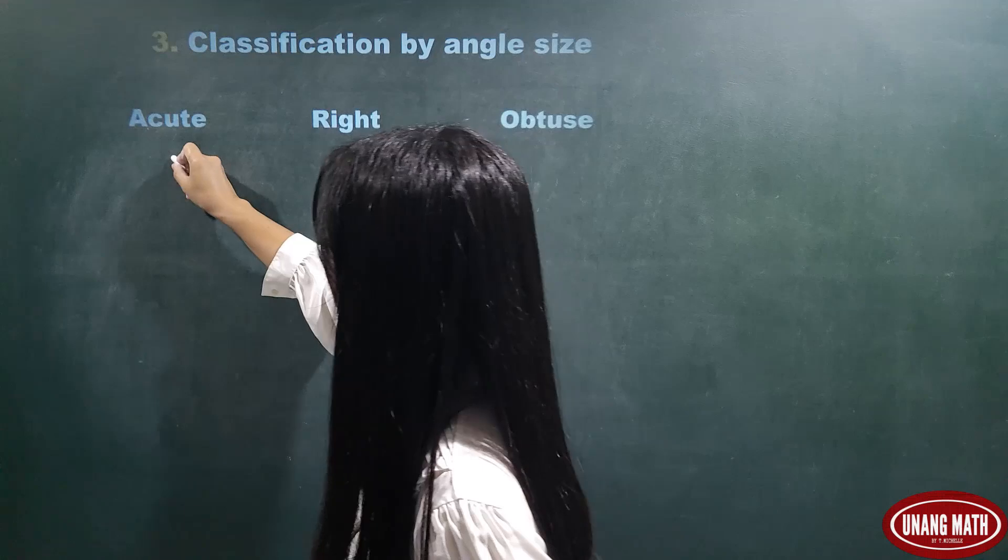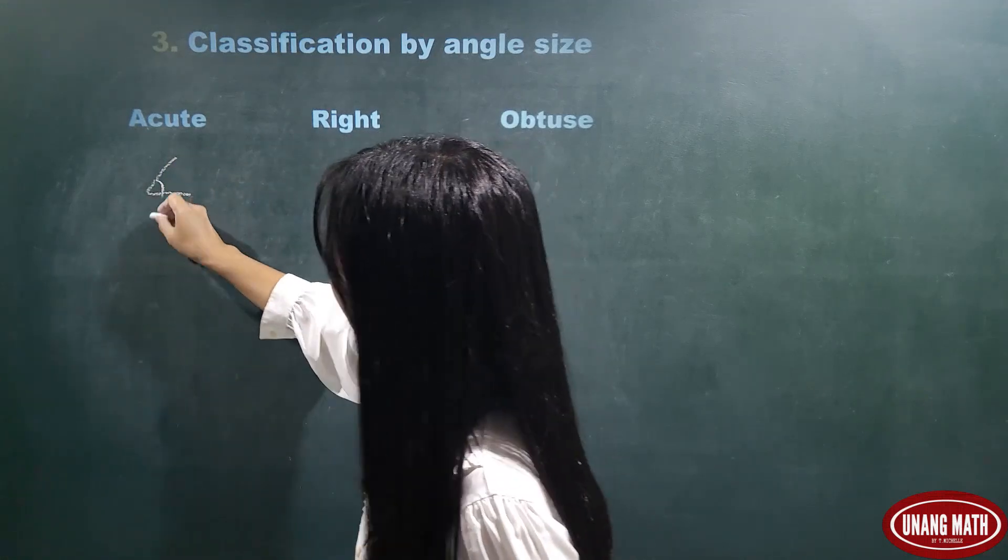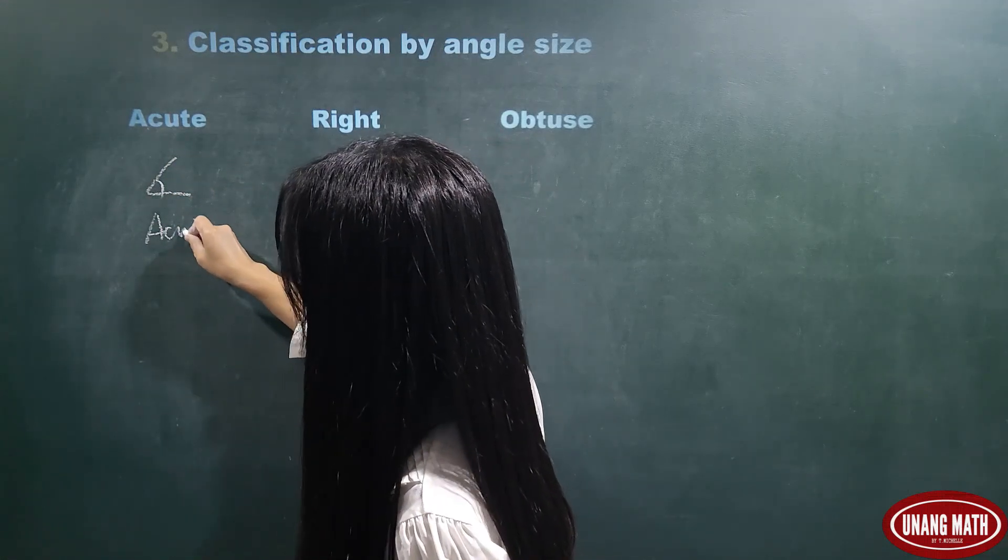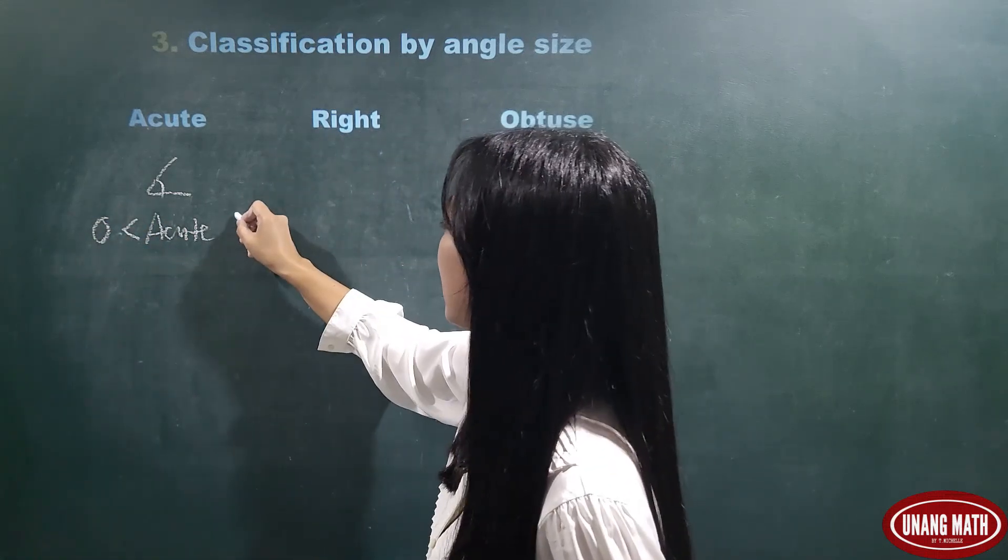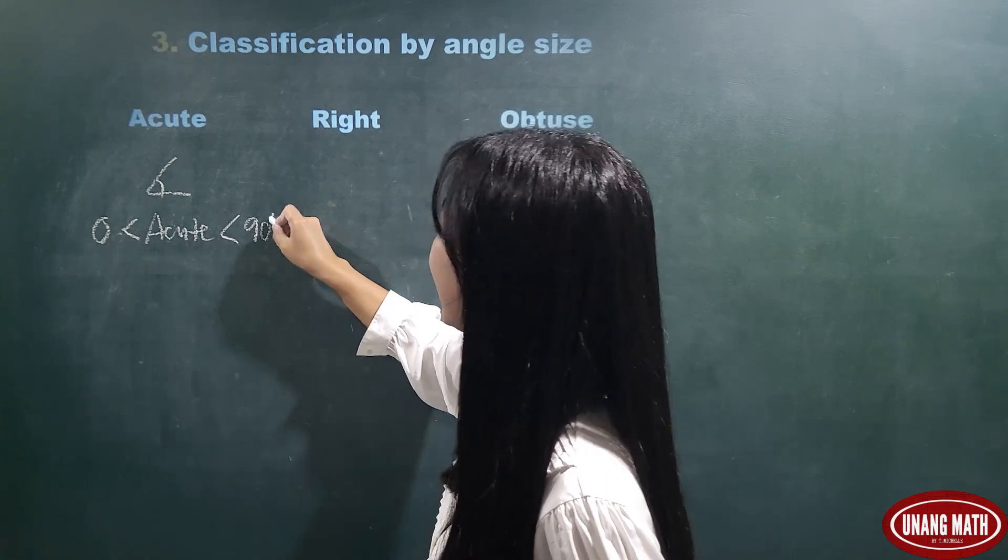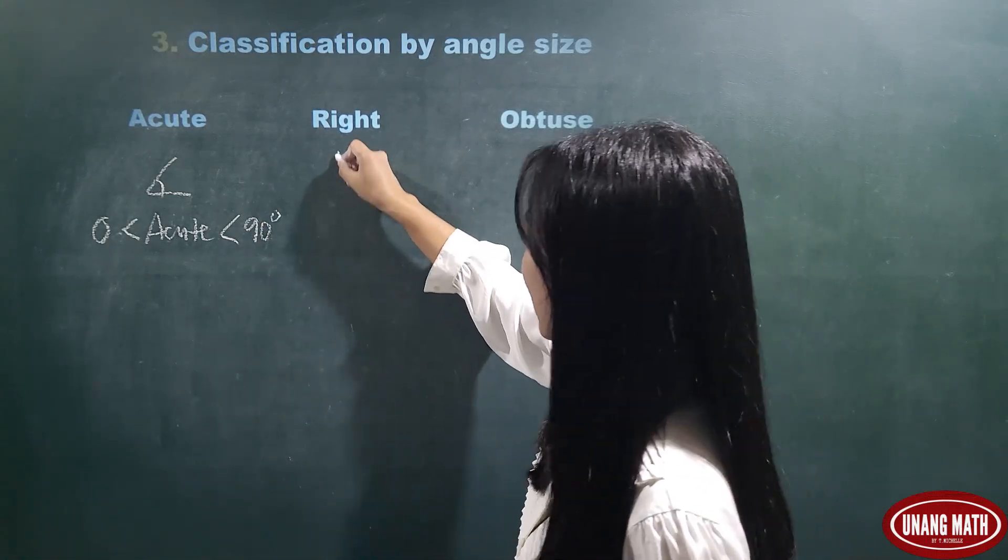Okay, let's start with acute angle. An acute angle is more than 0 degrees but less than 90 degrees. Okay, what about right angle?